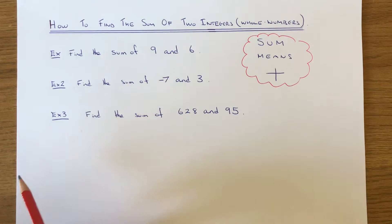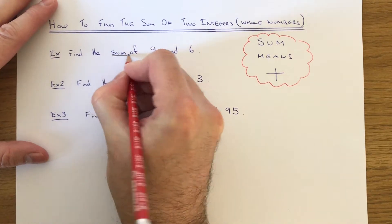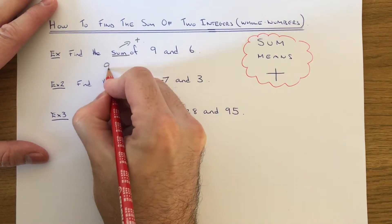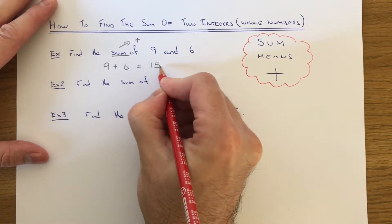Let's have a look at the examples here. We've got to work out the sum of nine and six. Sum means we need to add the numbers together, so we just need to work out nine add six, which is 15.